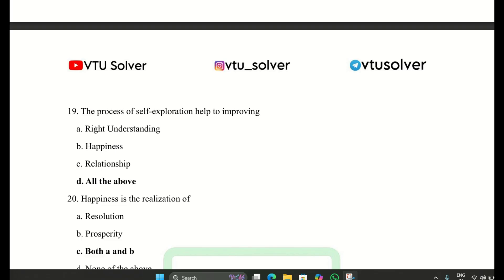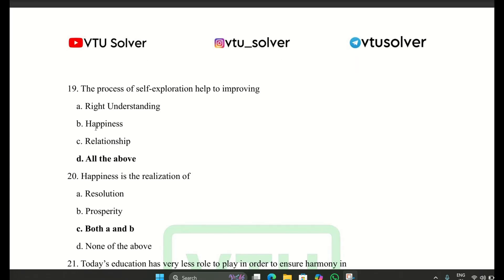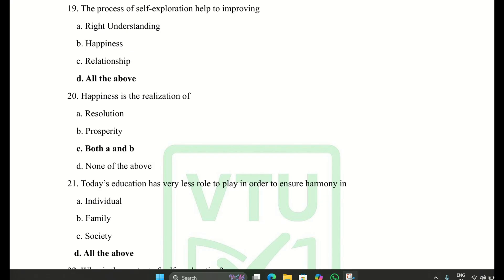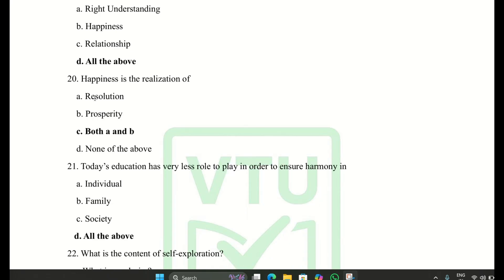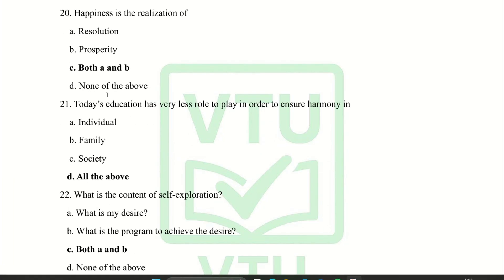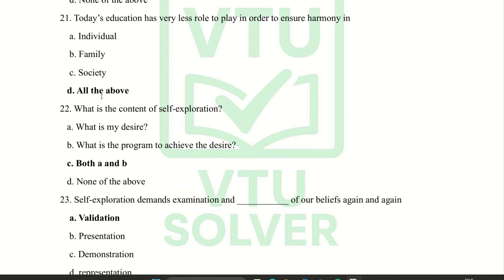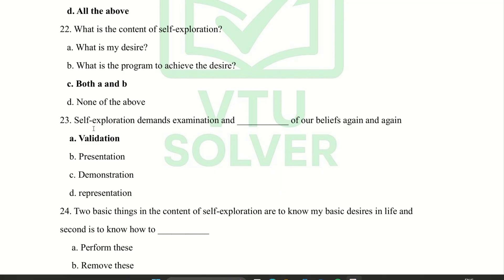The process of self-exploration helps in improving all of the above. Next question: happiness is the realization of both A and B — isolation and prosperity. Next question: today's education has very less role to play in order to ensure harmony in all of the above. Next question: what is the content of self-exploration? Both A and B — what is my desire, and what is the program to achieve the desire.